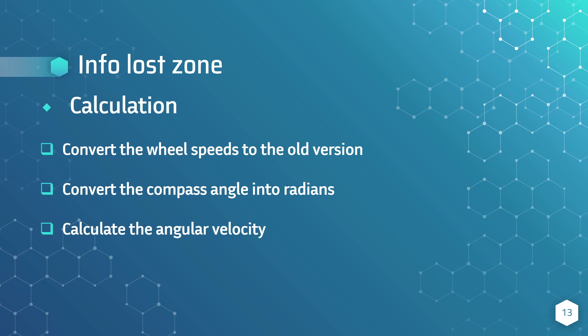The first problem I will be talking about is the info-loss zone. To traverse through the info-loss zone, I will first convert the speed to the old version, which is dividing it by 20. This is because the old version of CoSpace runs on speed 1 to 5, but in the new version the speed ranges from 1 to 100, so it is 20 times the old version.